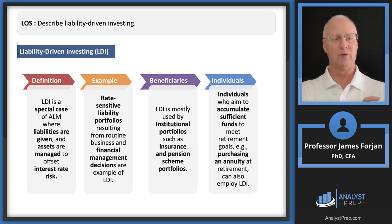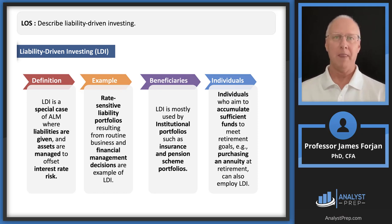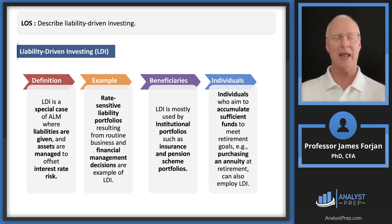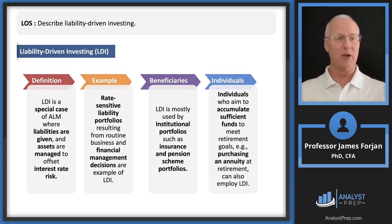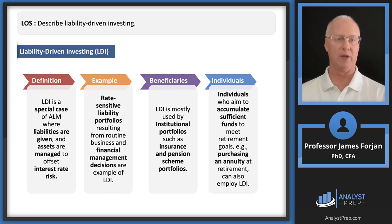We take those liabilities as a given and figure out what to do on the left-hand side of the balance sheet. The focus must be on both duration and convexity. As a general comment: if our liabilities have a weighted average duration of, say, five and a convexity of a hundred, we go find bonds with durations of five and convexities of a hundred to offset interest rate risk.